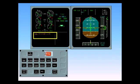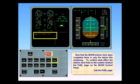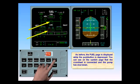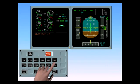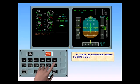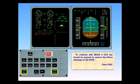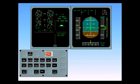Now that the ECAM actions have been completed, there is only the failure title remaining. To confirm what effect the actions have had on the system, re-select the fuel page on the ECAM control panel. Call the fuel page. The fuel page is displayed while the push button is depressed. You can see on the system page that the cross feed is connected and the pump has shut down. As soon as the push button is released, the engine warning display returns. To continue with ECAM, a clear key should be pressed to remove the failure message on the engine warning display. Clear fuel. Normally, the status page would be displayed, but with only a single ECAM screen available, the status page must be manually selected. Notice that there is a boxed STS symbol on the engine warning display.